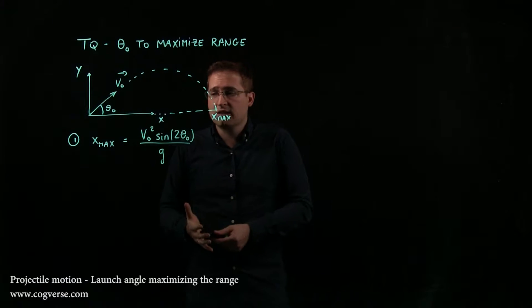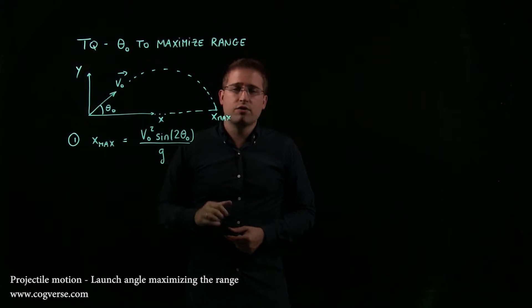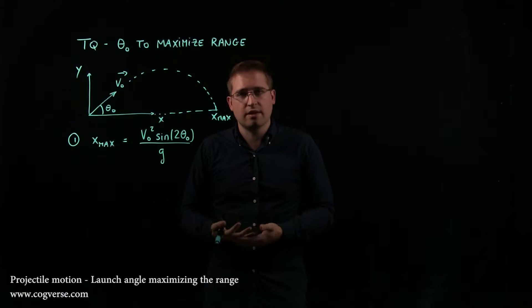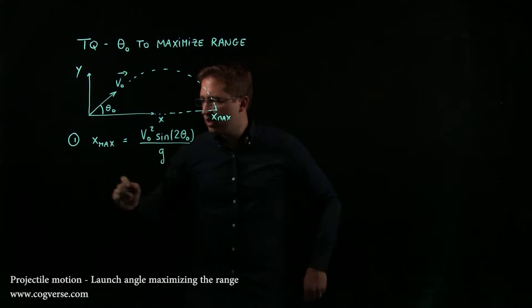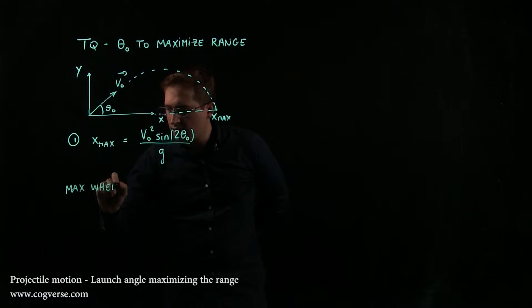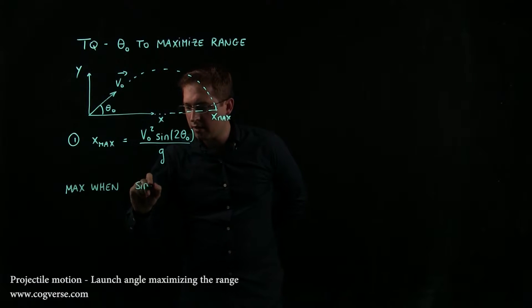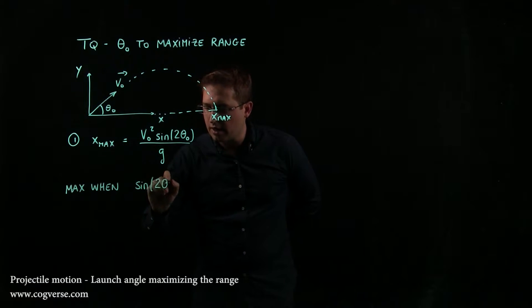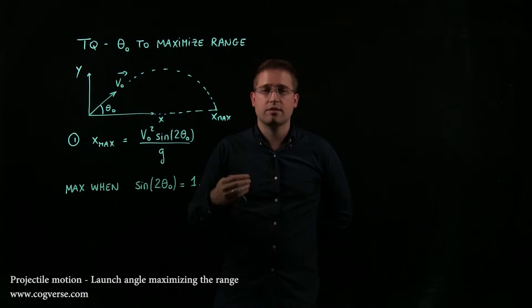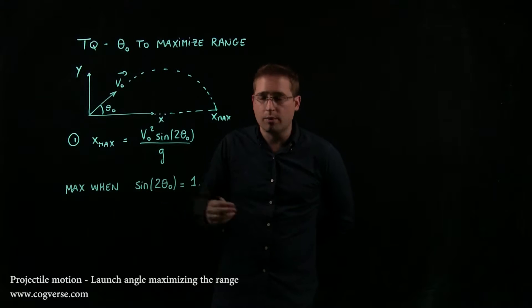In fact, it's maximized when sin(2θ₀) is equal to 1, because that's the biggest value that the sin function can take on. So this is max when sin(2θ₀) equals 1, because all the rest of the time, sin is smaller than 1.